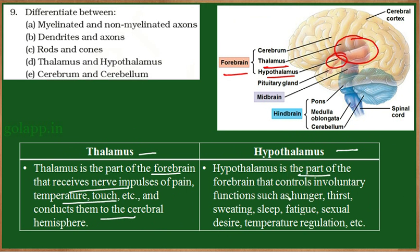The hypothalamus is also a part of the forebrain. It controls involuntary functions such as hunger, thirst, sweating, sleep, temperature regulation, and fatigue. It is a center for emotions including happiness, anger, anxiety, and fear. The hypothalamus is called the master clock because it controls sleep-wake cycles, hunger, and thirst. It also acts as a homeostatic center regulating body temperature and sweating. These are the differences between thalamus and hypothalamus.